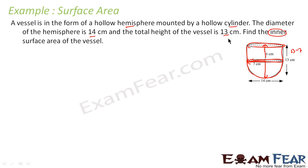The key point is: the total height was 13 cm, and the hemisphere contributes 7 cm (its radius), so the cylinder height is 13 minus 7 equals 6 cm. The first thing that should come to our mind is to understand the question properly, draw the diagram, and then put in all the values — find radius and height for everything.